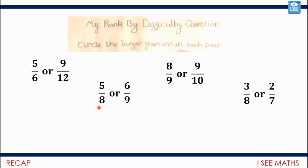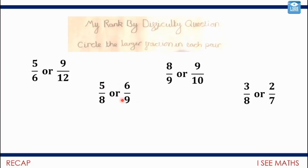In other cases we might look at more or less than a half. But sometimes both fractions are more than half or both less than half, so we may need to find a common denominator. I also want to highlight this pattern: five-eighths - if we add one to both the numerator and the denominator - five-eighths becomes six-ninths.